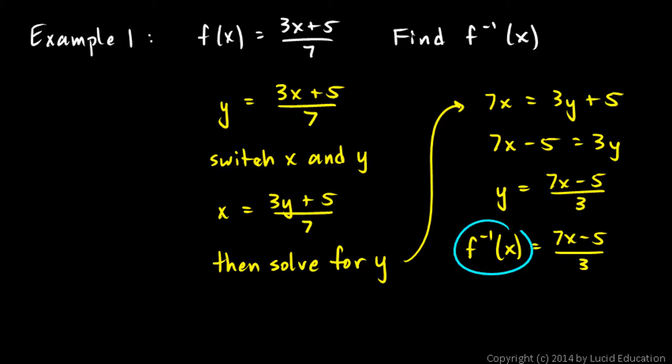And I would write it like this: f inverse of x equals 7x minus 5 over 3. Remember this notation here with the little negative 1 in the superscript position looks like an exponent, but it's not. That just means f inverse. The inverse of function f is this. So instead of 3x plus 5 over 7, I have 7x minus 5 over 3, a function and its inverse. If I were to graph those, you can see that this is a line and this is also a line, but they would be reflections across the line y equals x. We could see that graphically, but we've already looked at a few examples graphically. We're looking algebraically now.